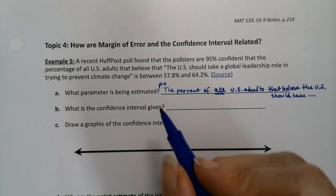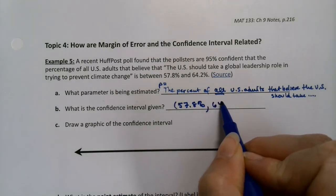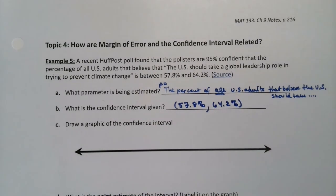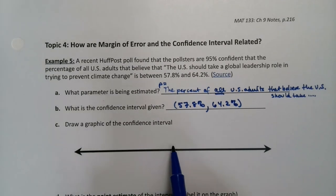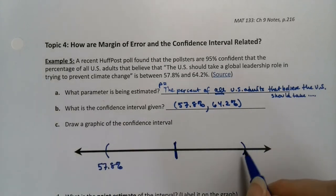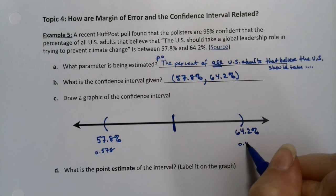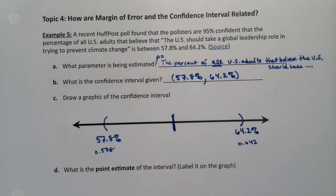Now the confidence interval being given is 57.8% to 64.2%. So now we want to draw a graphic. So if we have the center of our confidence intervals right here, the interval itself goes from 57.8%, or you could write those as 0.578, to 64.2% or 0.642. Just keep it consistent - either you do them all as decimals or all as percents.